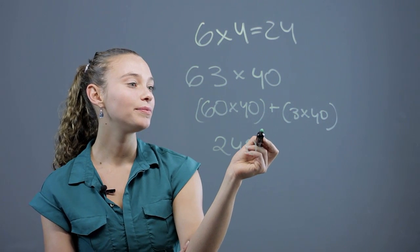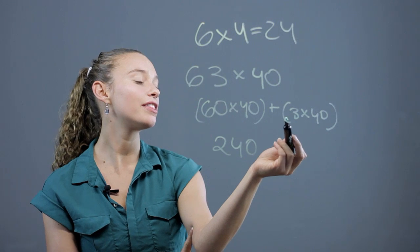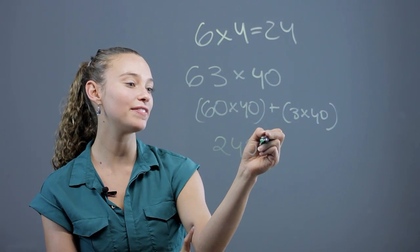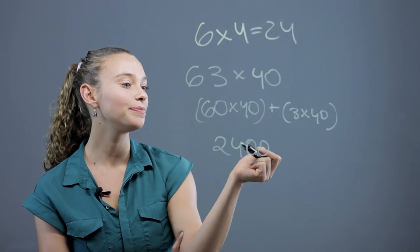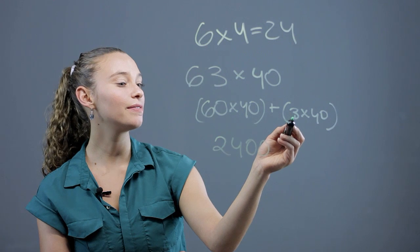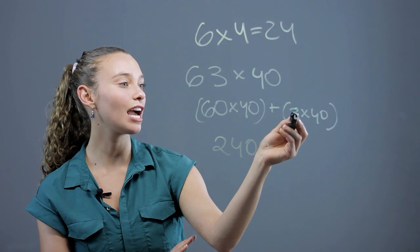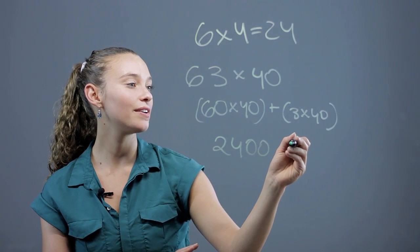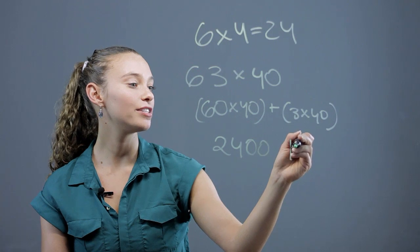And then we can say we know 3 times 40. We have to add both zeros. We know 3 times 40 is going to be 120.